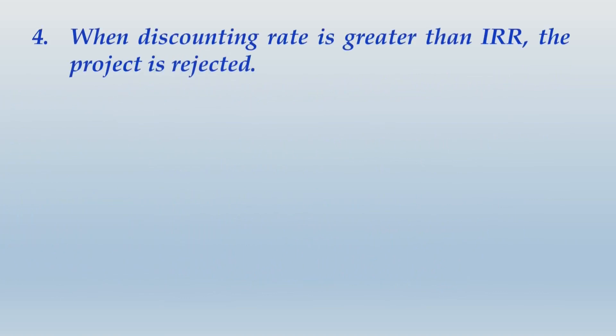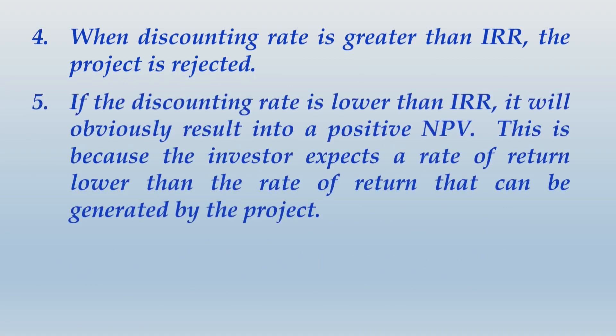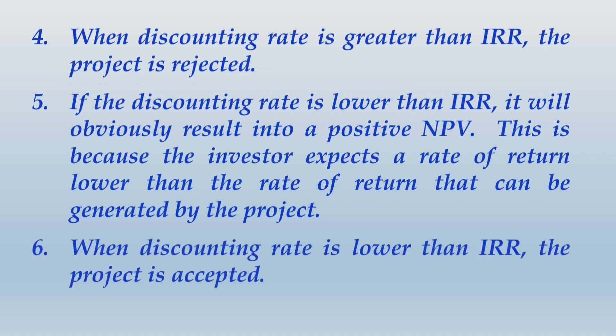When the discounting rate is greater than IRR, the project is rejected. If the discounting rate is lower than IRR, it will result in a positive NPV because the investor expects a rate of return lower than what the project can generate. When the discounting rate is lower than IRR, the project is accepted.